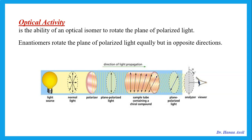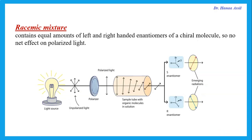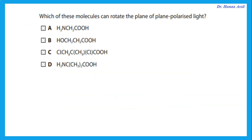Enantiomers are a pair of chiral isomers that are non-superimposable mirror images. Optical activity is the ability of an optical isomer to rotate the plane of polarized light. Each enantiomer alone will rotate the plane of polarized light in opposite directions. But if we have an equal mixture of both enantiomers, that is called a racemic mixture, and there will be no net rotation of the plane of polarized light.